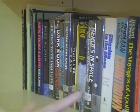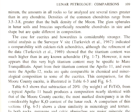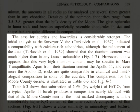On page 109 of their NASA-funded 1970 book, 'The Lunar Rocks', Mason and Melson write: 'The case for eucrites and Howardites is considerably stronger. The initial analysis at the Surveyor 5 site indicated a comparability with calcium-rich achondrites, although the refinement of the data showed the titanium content was much higher than any known achondrite. However, it now appears that this very high titanium content may be specific to Mare Tranquilitatis. Apart from their titanium content, the Apollo 11 and even more the Apollo 12 rocks are quite comparable in chemical and mineralogical composition to some of the eucrites.'